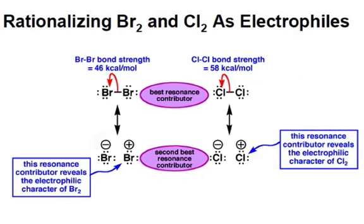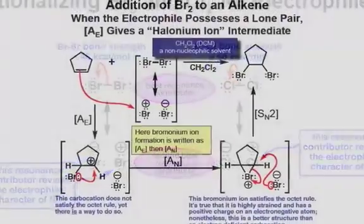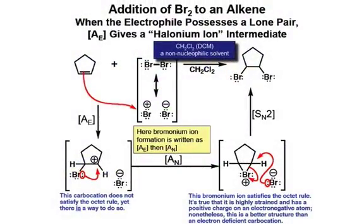Notice that on either the positively charged bromine atom or the positively charged chlorine atom, lone pairs reside on it, so it's an electrophile with lone pairs, and thus will undergo an A sub E followed by an SN2 when reacting with an alkene.